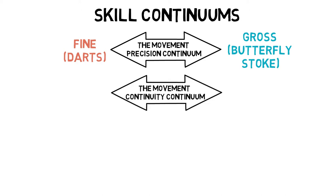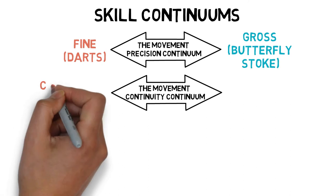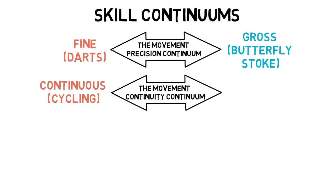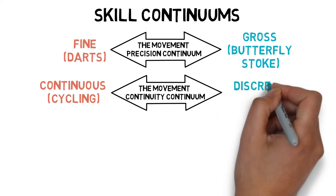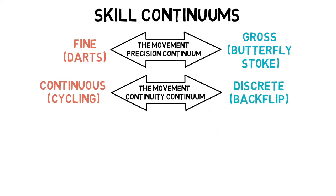The movement-continuity continuum deals with continuous skills, which are repeated movements such as cycling, and discrete skills, which have a defined start and finish such as a backflip.